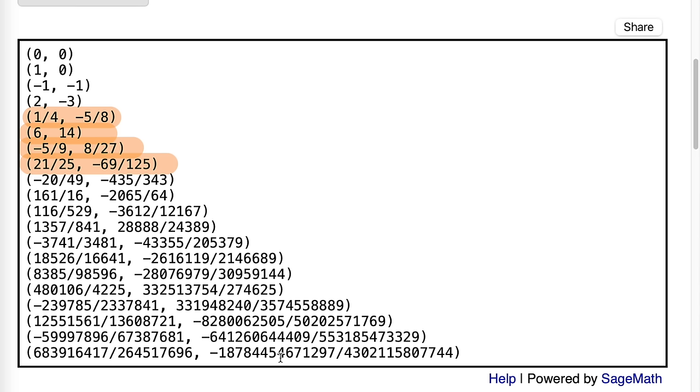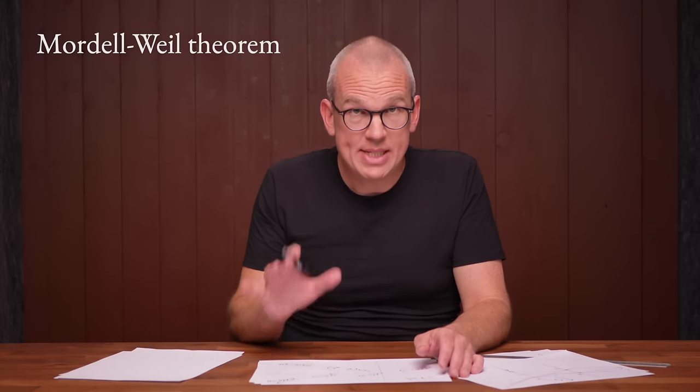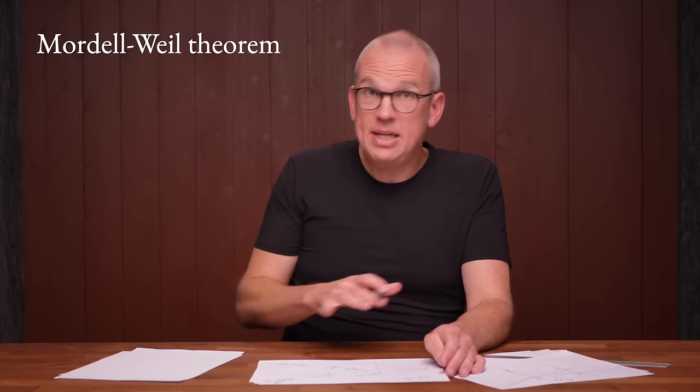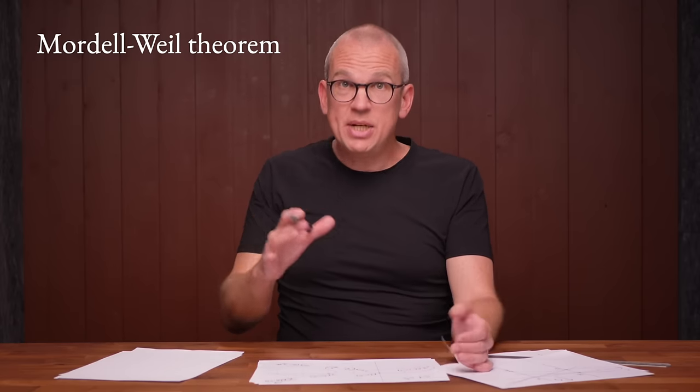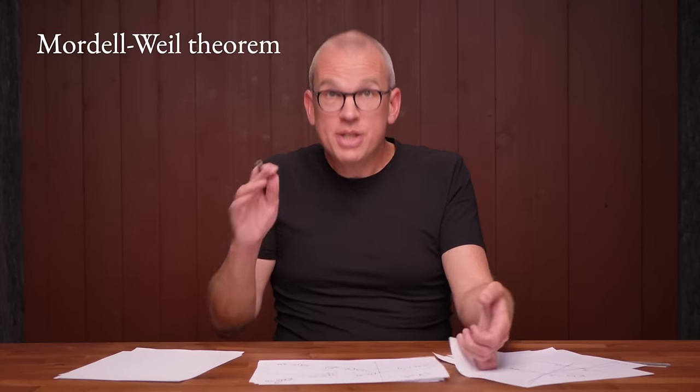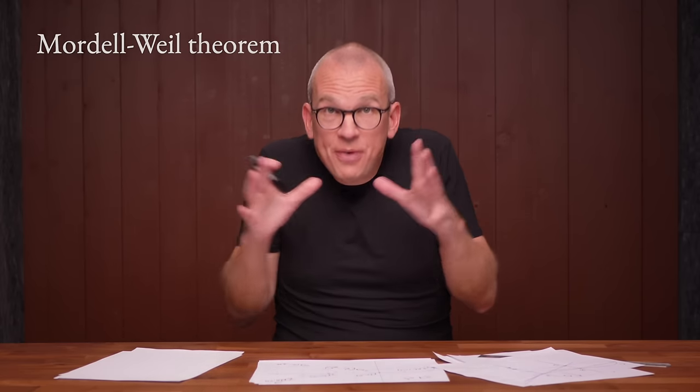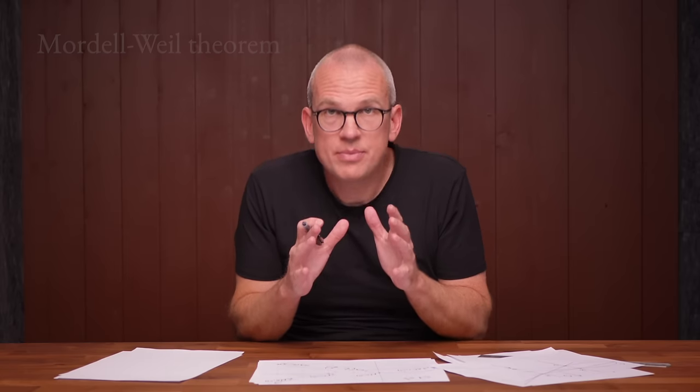There is a theorem, the very important Mordell-Weil theorem, which says that even though an elliptic curve may have infinitely many rational points, you can generate all of them starting from just a finite set. And by generate, I mean using addition and using vertical friend, which, if you think about it, is unary minus.